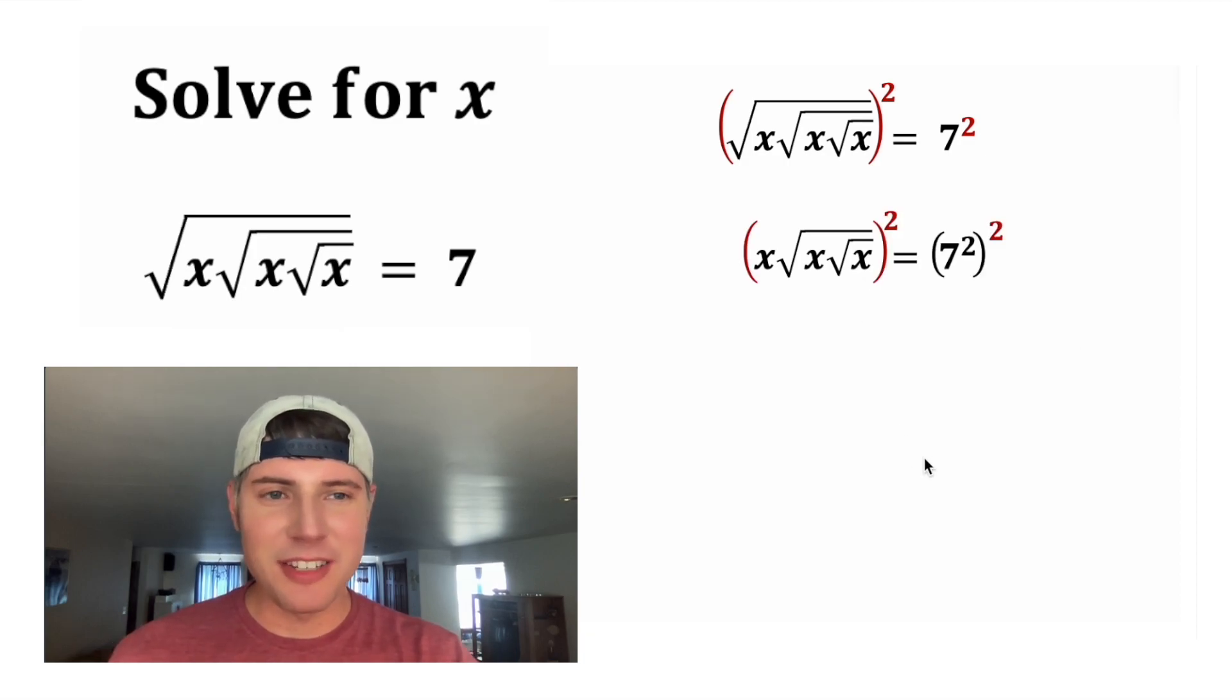And then once again, let's square both sides of the equation. This squared will distribute both to the x to give us x squared and also to this thing to give us this thing squared. And then the square will cancel out the outer square root.